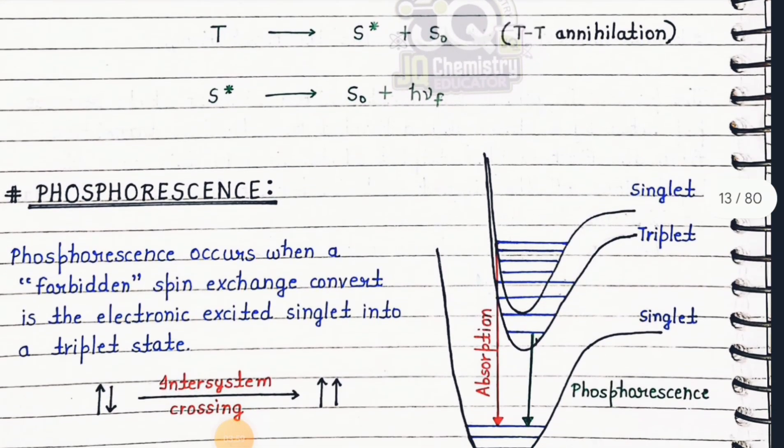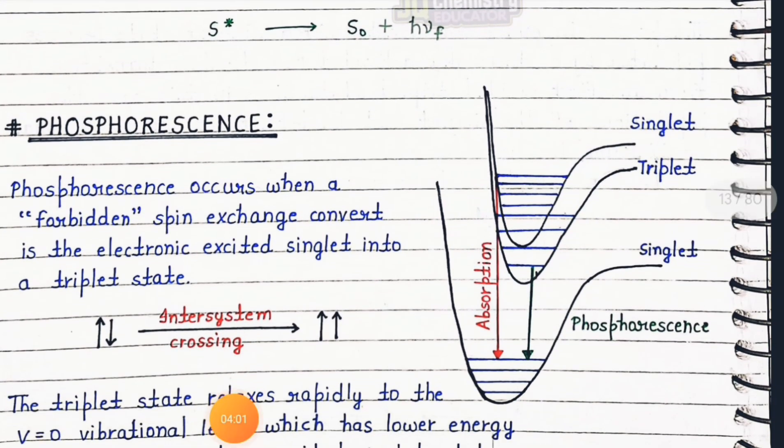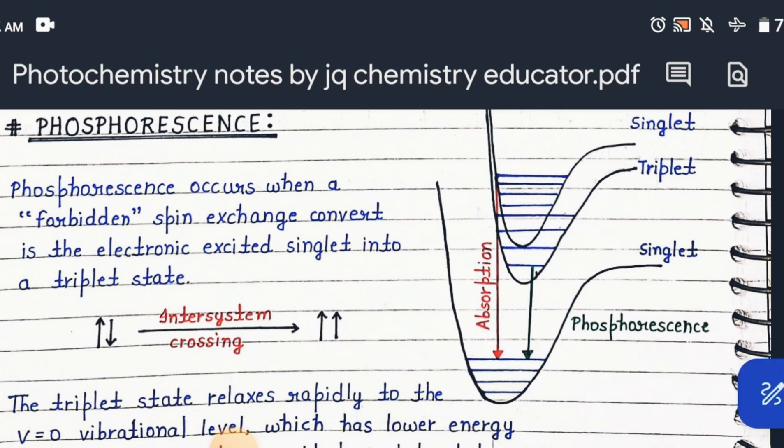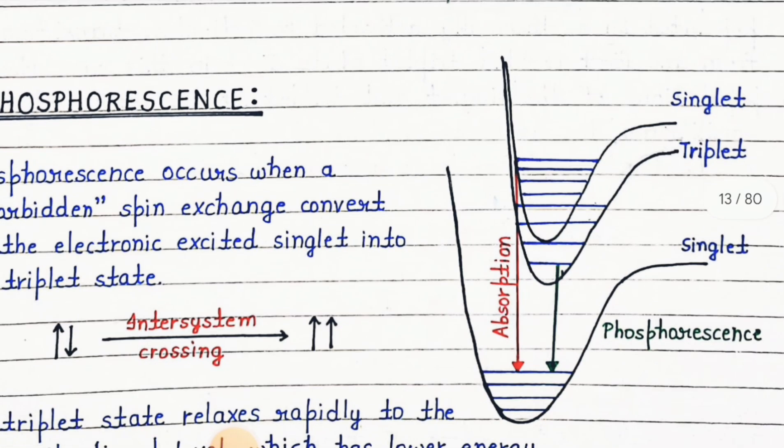Now we will talk about phosphorescence. What is phosphorescence? Phosphorescence occurs when a forbidden spin exchange converts the electronic excited singlet into a triplet state. How does it happen? Inter-system crossing. Now look at this diagram.